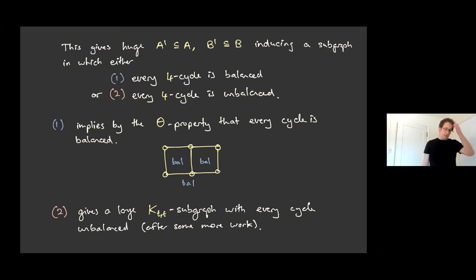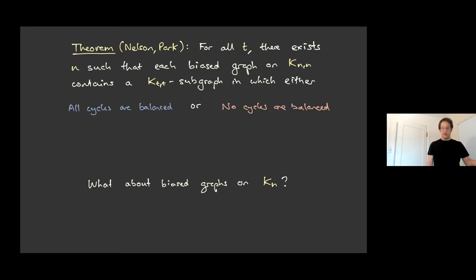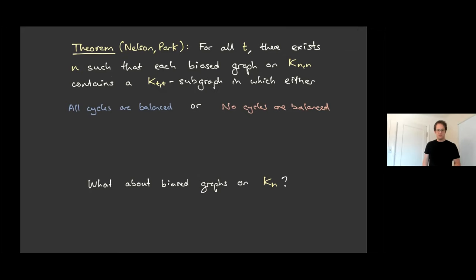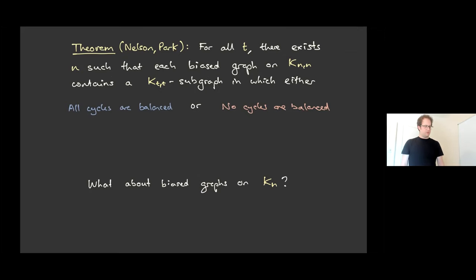In a big complete bipartite graph, you get one extreme outcome or the other in a large subgraph. This is a real question from structural matroid theory, but if you think Ramsey questions for bias graphs are interesting, this isn't the first question you'd ask. Ramsey theory is most natural for a complete graph, not a complete bipartite graph. So a reasonable question is: what do I find inside a huge bias graph where the underlying graph is a clique?